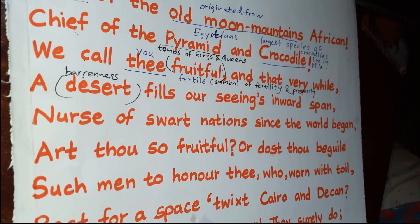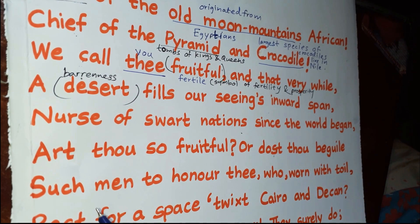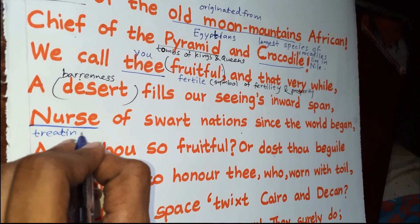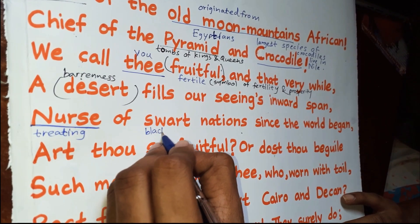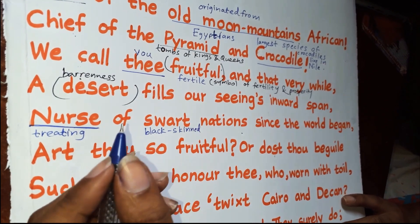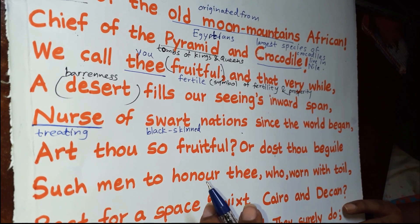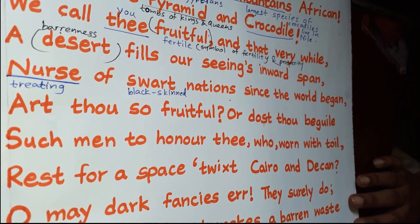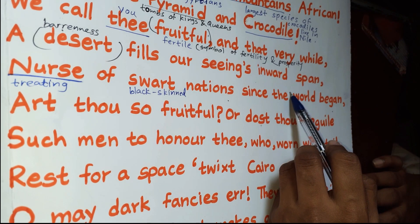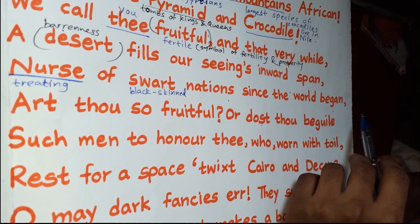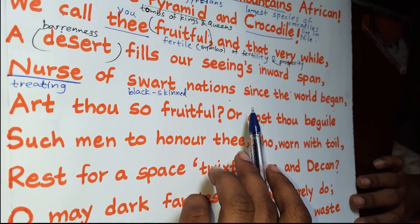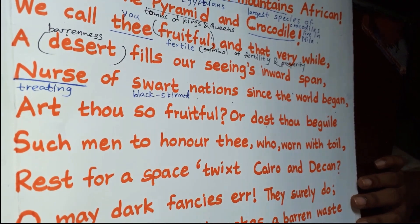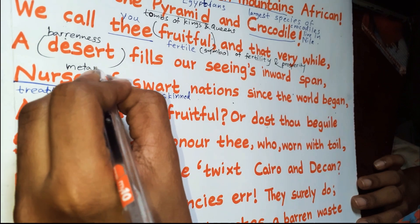The next line reads: 'Nurse of swart nations since the world began.' 'Swart nations' means black-skinned people — exactly the African tribes or African people who lived long ago, where human civilization began. So 'since the world began' refers to when and where human civilization started. Here you can see a metaphor — the Nile River is compared to a nurse of the swart nations.